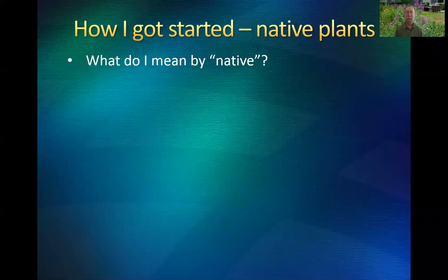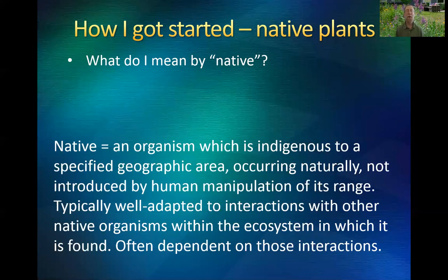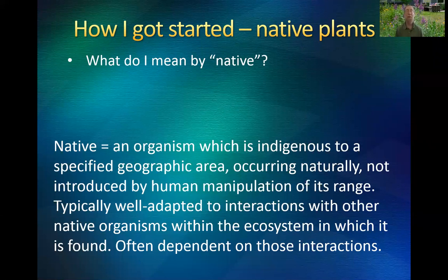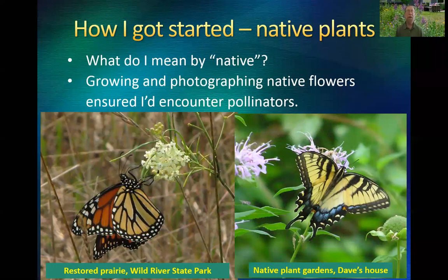I should define 'native' so we're all on the same page. A native organism is any organism that's indigenous to a specified geographic area like Minnesota. It occurs there naturally — it wasn't introduced by human extension of its range. The work that got me going was restoration of about a square mile of prairie from former cultivated land at Wild River State Park. It had been Oak Savannah before it was cultivated.